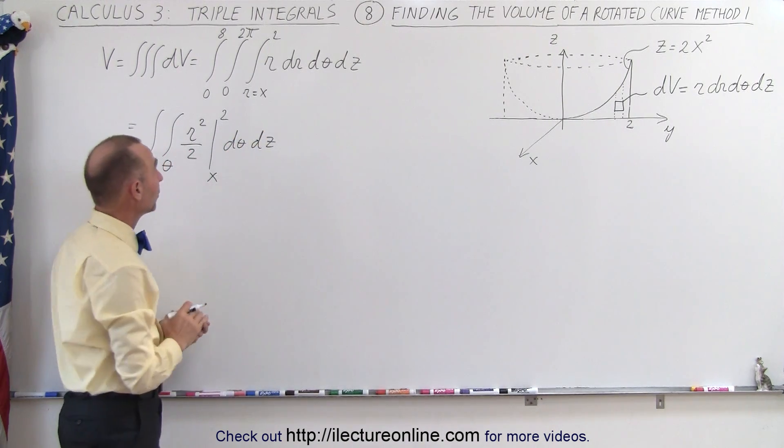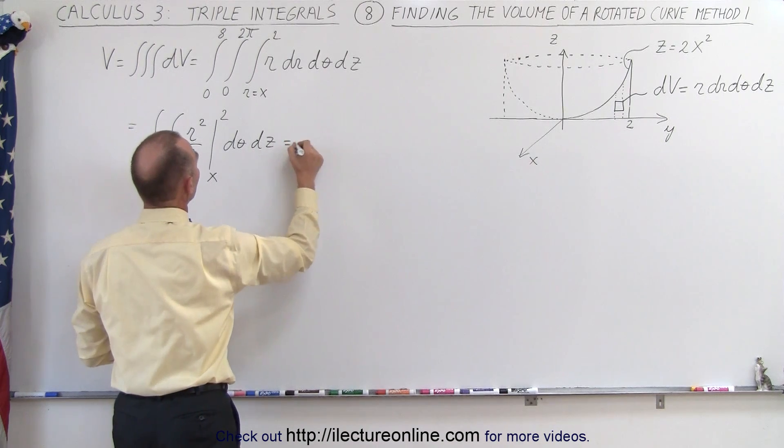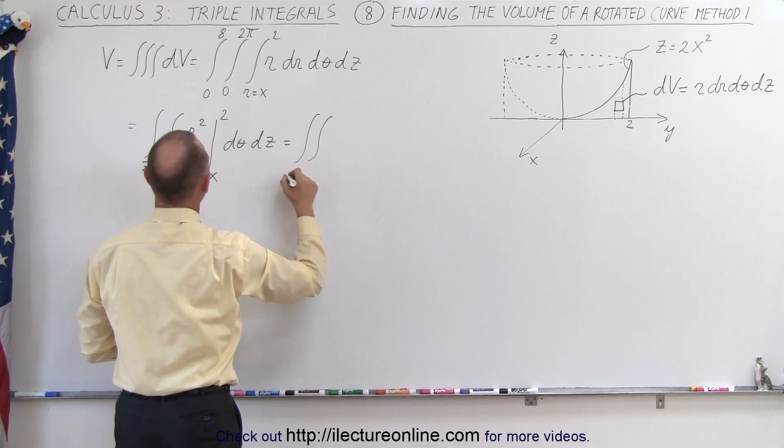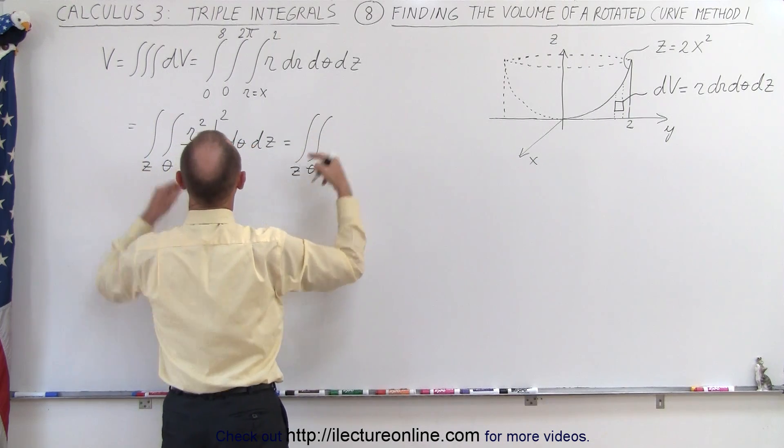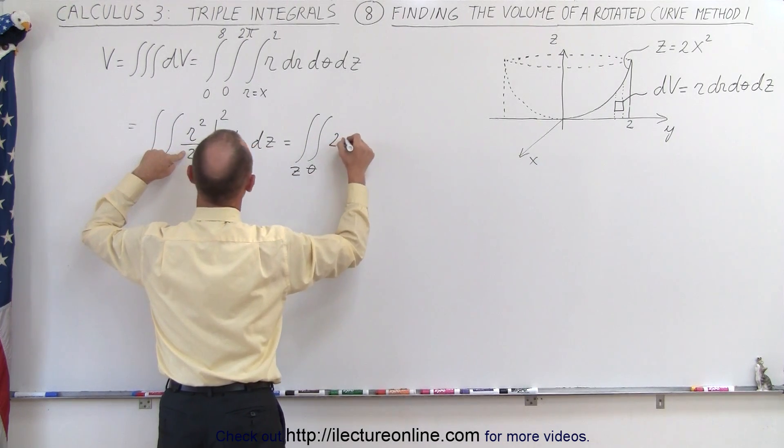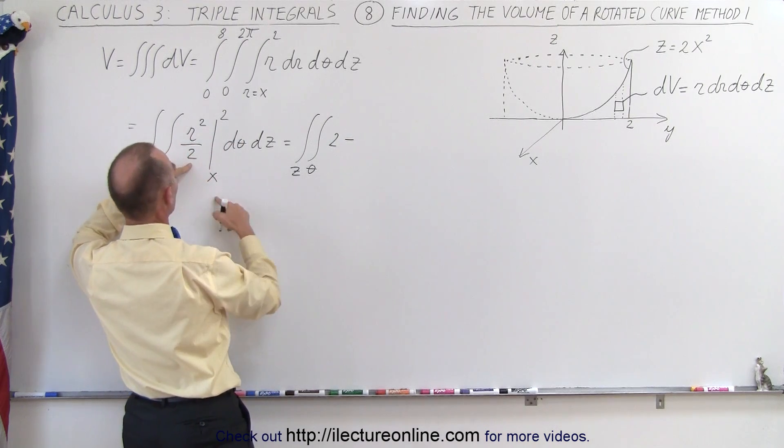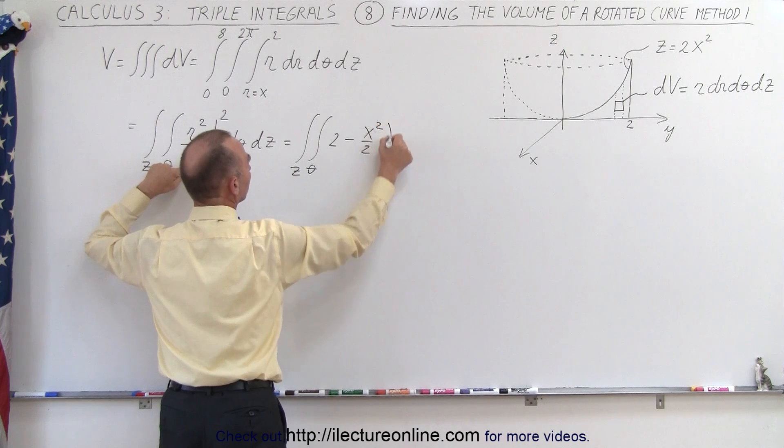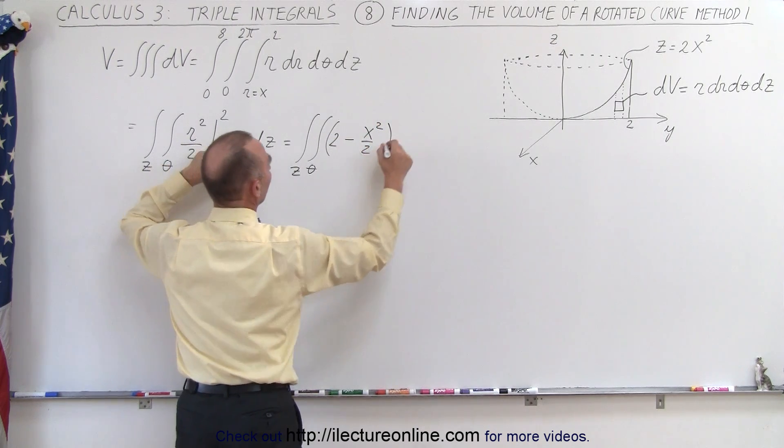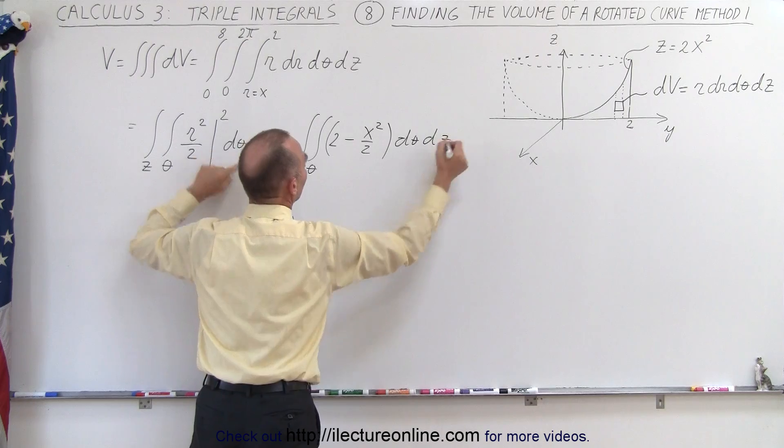So when we plug in the upper and the lower limits we get the following. This is equal to the double integral—we have θ and z—so this becomes, when we plug in the upper limit, that's 4 divided by 2 which is 2, minus when we plug in the lower limit we get x squared over 2, put parentheses around that, and we still have dθ and dz.